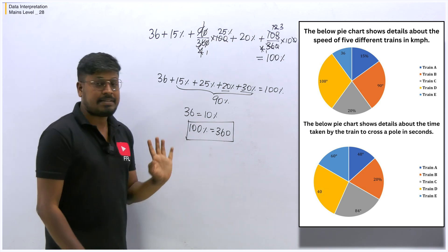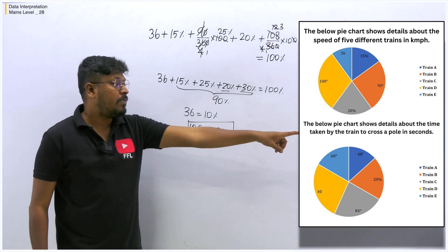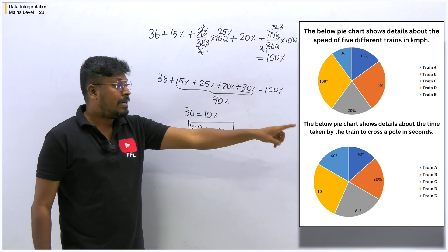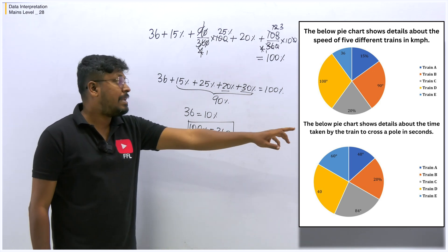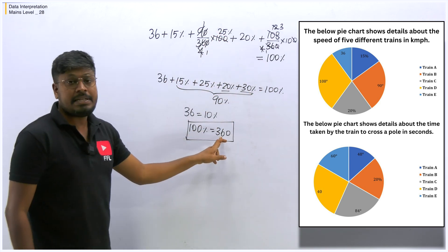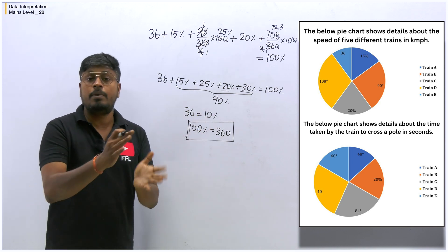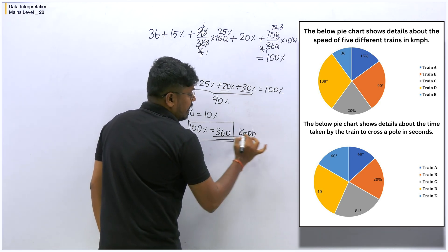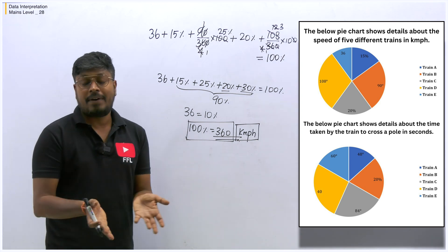Now finding the speed of Train A and Train B is easy. Train A is 15% — 15% of 360 is straightforward. For Train B, 90 degrees was converted to 25%, which is one-quarter of 360. You can easily find each train's speed now. All speeds are in kilometers per hour, so remember you must convert them later. The sum of all 5 train speeds is 360 kilometers per hour.